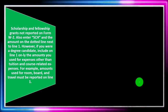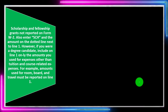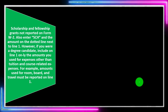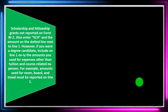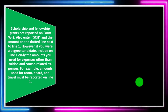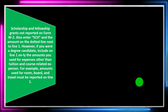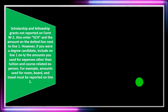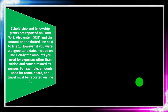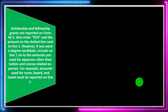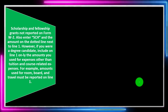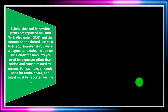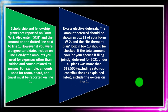Scholarship and fellowship grants not reported on Form W-2 should also be included — enter 'SCH' and the amount on the dotted line next to line one. However, if you were a degree candidate, only include amounts used for expenses other than tuition and course-related expenses. For example, amounts used for room, board, and travel must be reported on line one.